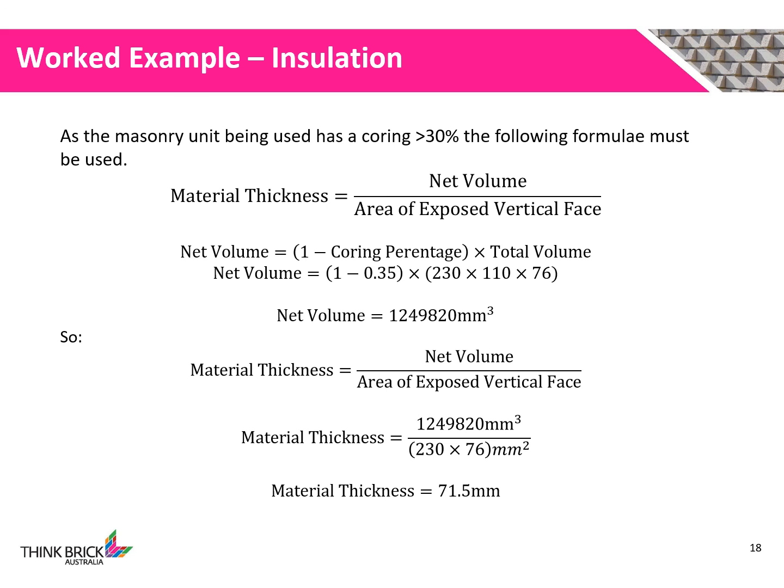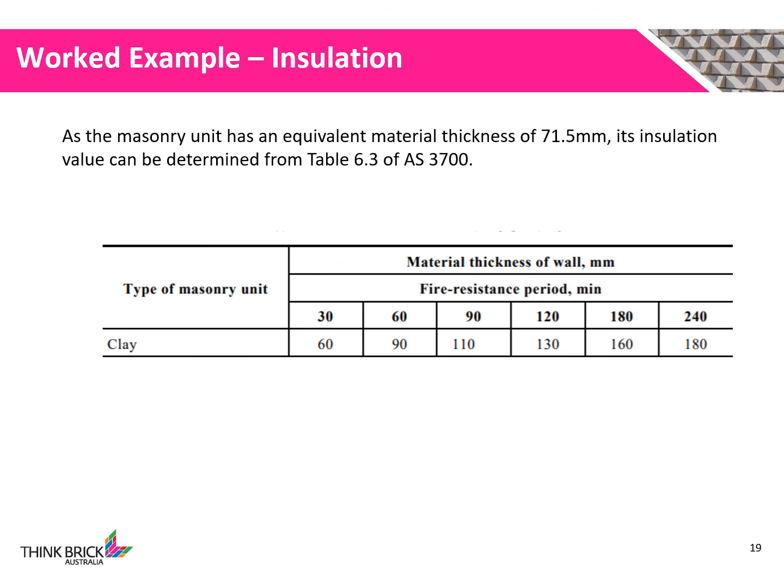As our masonry unit has voids greater than 30%, we must use the material thickness formula: material thickness equals net volume divided by the area of the exposed vertical face. Net volume is equal to the total volume of the unit times one minus the coring percentage. The area of the exposed vertical face is simply the area of the brick face: 230mm by 76mm. Substituting these numbers in, we determine the material thickness to be 71.5mm. Using Table 6.3 of AS 3700, we can determine the insulation value. As our material thickness does not meet or exceed 90mm, the 60mm threshold value must be adopted, giving an insulation value of 30 minutes.